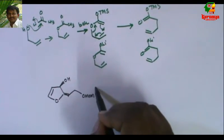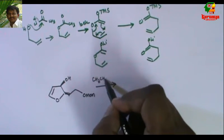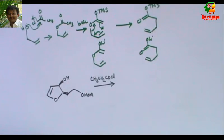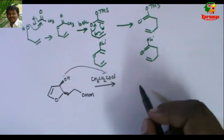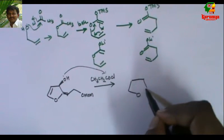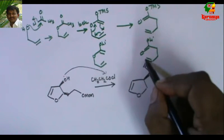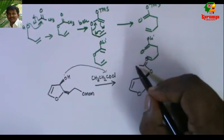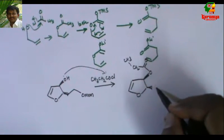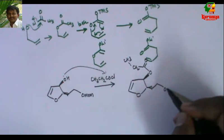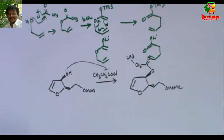This is the given compound. It is treated with propionyl chloride — the oxygen attacks and Cl is the leaving group. So what we get is this ester.